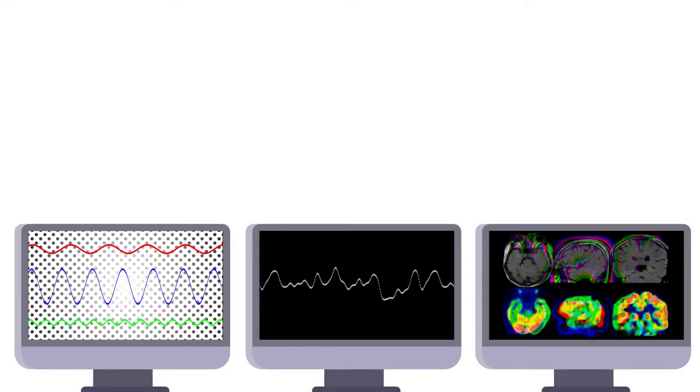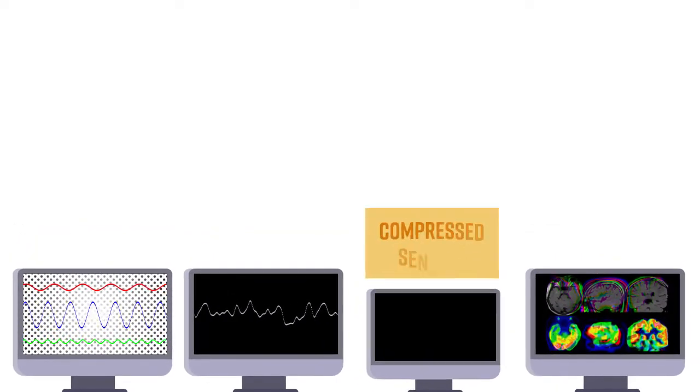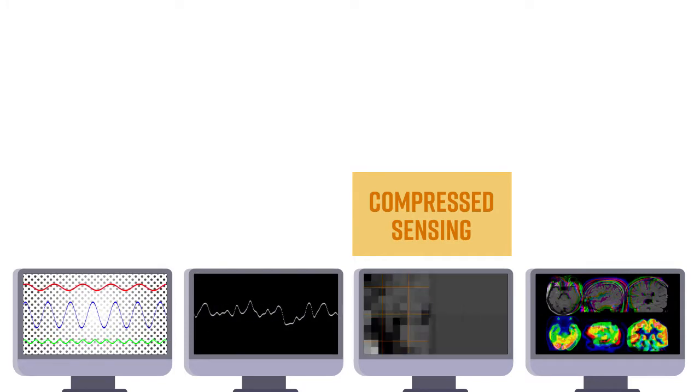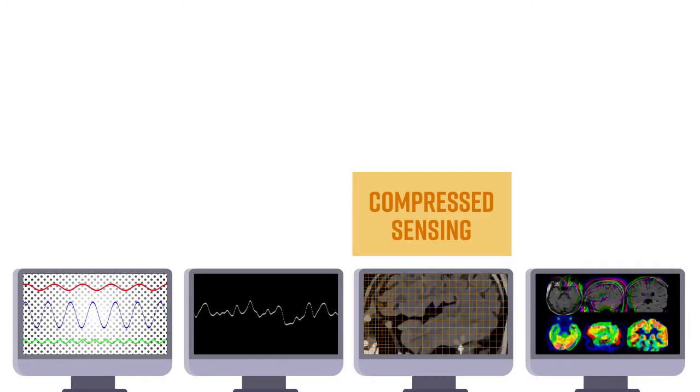Recently, another state-of-the-art signal processing technique is being investigated: compressed sensing. Compressed sensing uses sophisticated signal processing techniques to construct an image from partial k-space samples, resulting in faster image creation but without the Gibbs ringing.